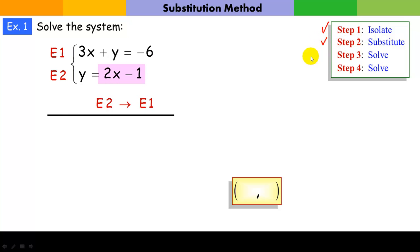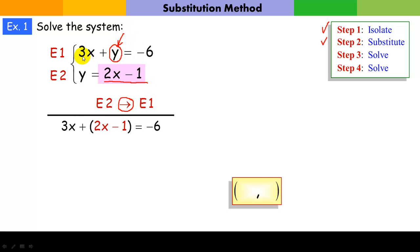Now we're going to substitute. Substitute means we're going to take equation two, and since we've isolated y, we are going to plug it into equation one wherever we see y — right here. We are basically going to take 2x minus 1 and replace y in this equation. Now it's going to be 3x plus, but that y is replaced with 2x minus 1, because we're saying y is 2x minus 1. Once we have substituted, our next step is to solve this equation for its lone variable x.